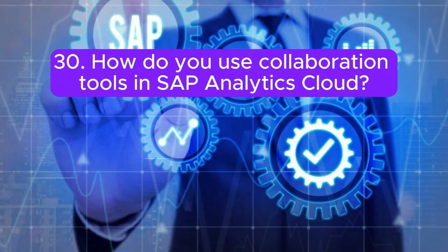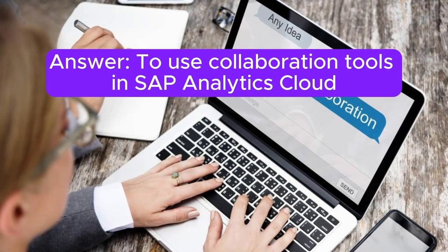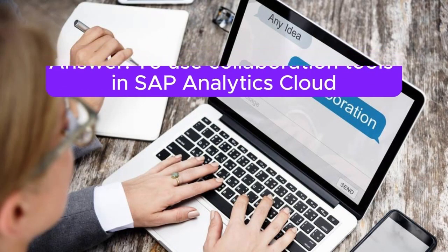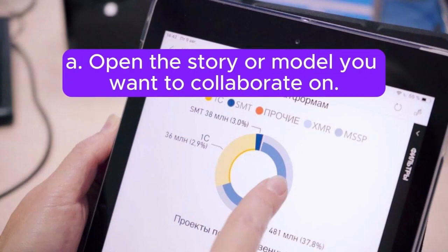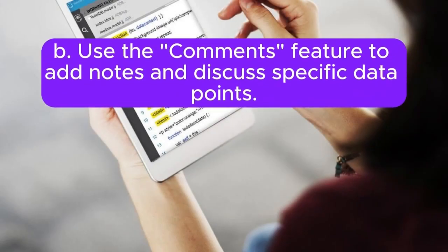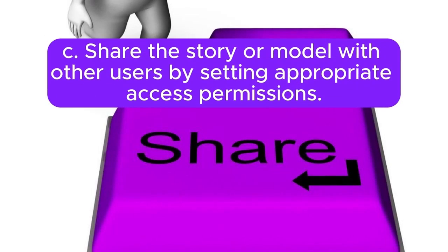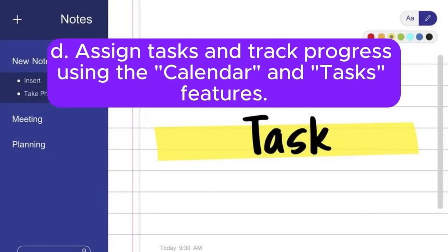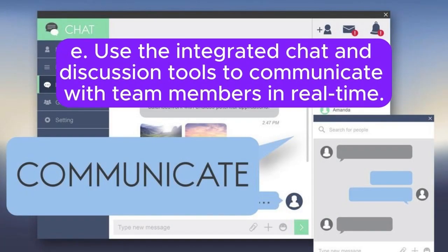Question 30: How do you use collaboration tools in SAP Analytics Cloud? Answer: To use collaboration tools in SAP Analytics Cloud: A. Open the story or model you want to collaborate on. B. Use the comments feature to add notes and discuss specific data points. C. Share the story or model with other users by setting appropriate access permissions. D. Assign tasks and track progress using the calendar and tasks features. E. Use the integrated chat and discussion tools to communicate with team members in real time.